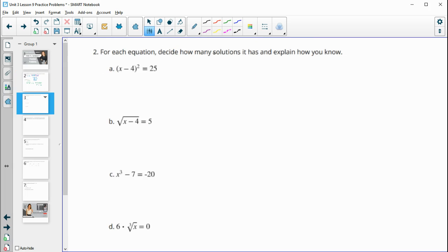Number two, for each equation, decide how many solutions it has and explain how you know. Anything squared equaling a positive number is going to have two solutions because we could have a positive or a negative solution here. If this middle part equals positive 5 squared is 25 or negative 5 squared is 25. So this one's going to have two solutions.